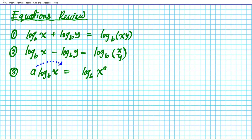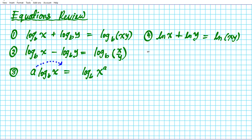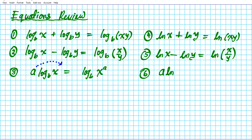These properties can also be extended to log base E — the rational number E — known as natural logarithms. If you have the natural logarithm of X plus the natural logarithm of Y, you apply the product property to get the natural logarithm of XY. For the natural logarithm of X minus the natural logarithm of Y, you apply the quotient property to get the natural logarithm of X over Y. The power property also applies: a times ln X equals ln of X to the a power.